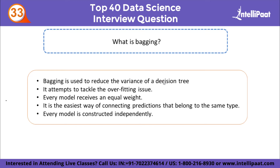What is bagging? Bagging, also known as bootstrap aggregating, is a machine learning ensemble algorithm designed to improve the stability and accuracy of a machine learning algorithm. It decreases variance and is used to reduce the variance of a decision tree. Bagging also attempts to tackle the overfitting issue. Unlike boosting, every model receives an equal weight and every model is constructed independently.